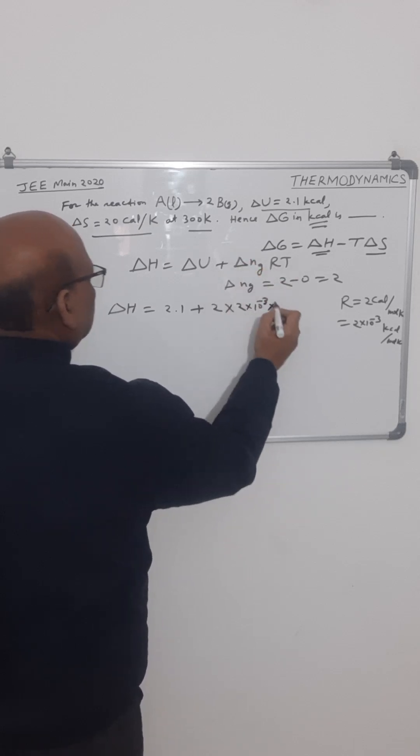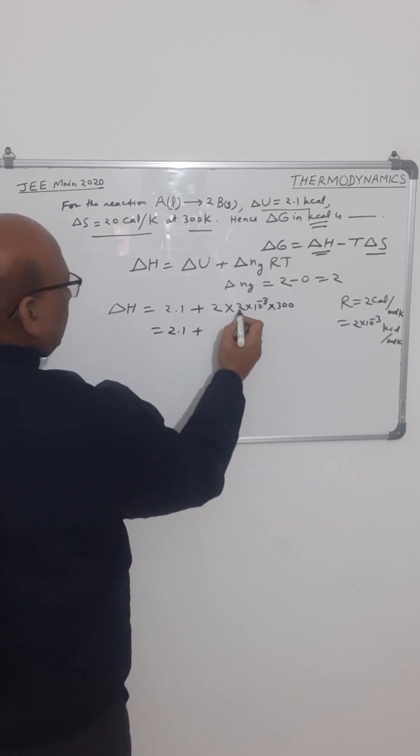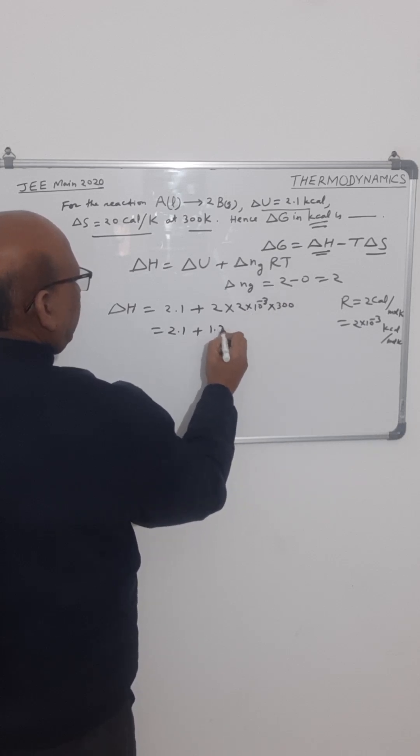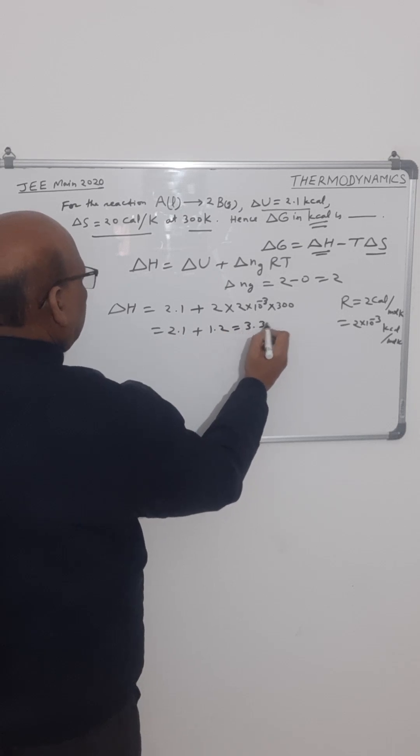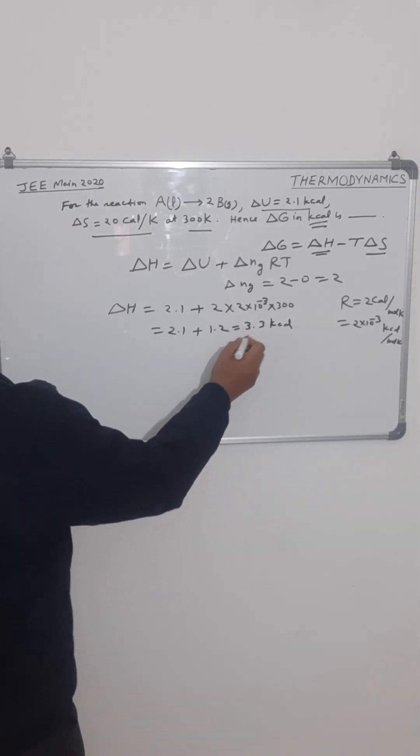And temperature T is given to us as 300 kelvin. So this will be 2.1 plus this will be 1.2. So this will be 3.3 kilocalorie. The value is in kilocalorie.